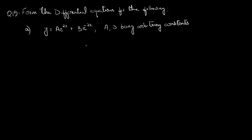Question 15. Form the differential equation for the following. Part A: y equals a e raised to 2x plus b e raised to minus 2x, where a and b are arbitrary constants. Given this equation, we have two arbitrary constants. Eliminating these two arbitrary constants will give us a differential equation of order 2 that satisfies this family of curves.